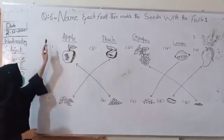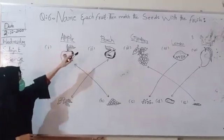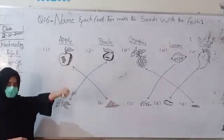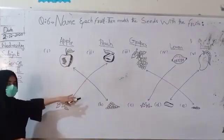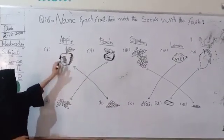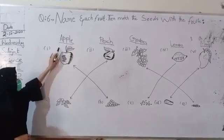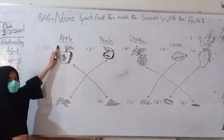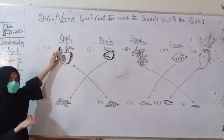Course number 6. Name each fruit, then match the seed with the fruits. Okay? Here figures and structures are made. I have mentioned names on the top of them. So let's start. What is the fruit?